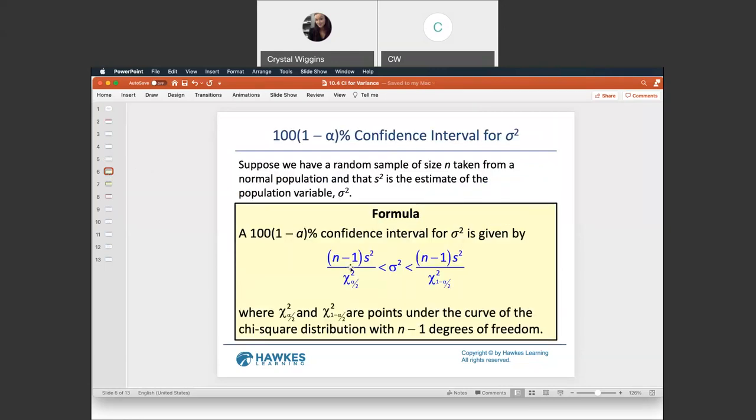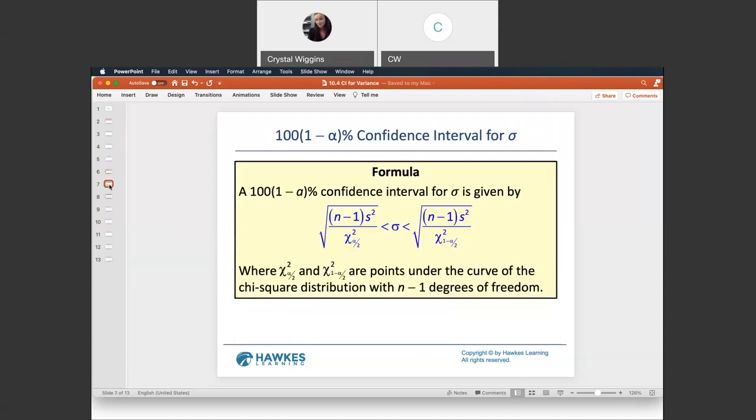If we were trying to find it for variance, here is the formula for variance. N minus one is degrees of freedom. So whatever the sample size is, subtract one, that's degrees of freedom. S-squared is the sample variance, and chi-squared is the critical value that we will use our guru to find. If we were trying to do a confidence interval for standard deviation, sigma, then notice there's one step difference, and that is the square root on both sides.